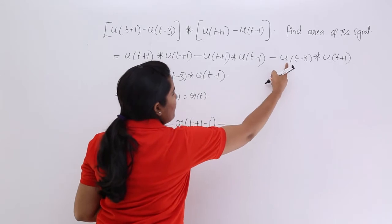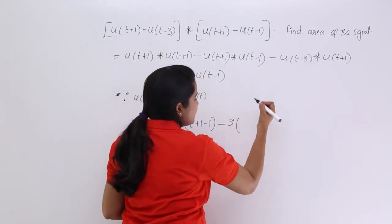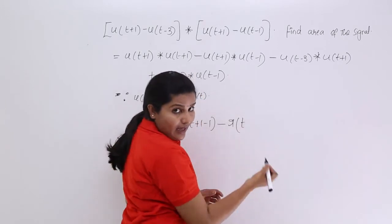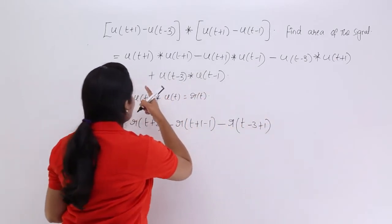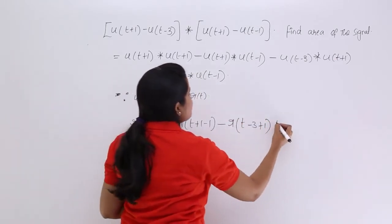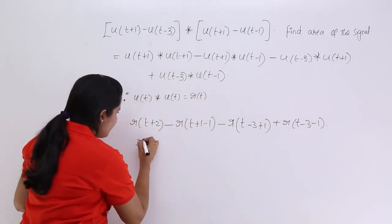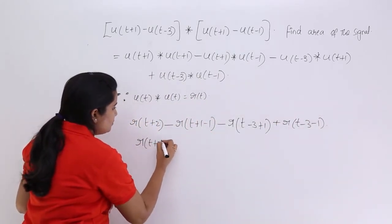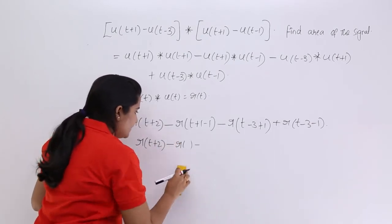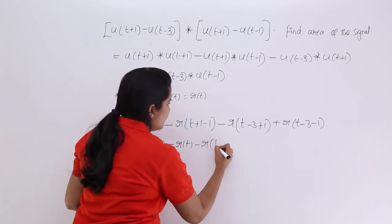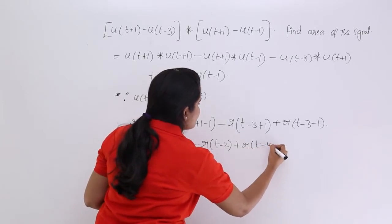Similarly, u(t) convolution with u(t) again gives a ramp signal with the shift effect from t-3 plus 1, giving r(t-2). And for the last term, we get r(t-4). So writing it all out: r(t+2) minus r(t) minus r(t-2) plus r(t-4). This is the resultant signal from the convolution.